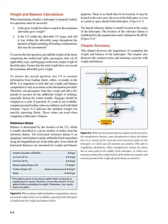Examples are placement of hoist systems attached to the side, and wing stores commonly used on military aircraft for external fuel pods or armament systems. Weight and balance calculations: When determining whether a helicopter is properly loaded, two questions must be answered. 1. Is the gross weight less than or equal to the maximum allowable gross weight? 2. Is the CG within the allowable CG range, and will it stay within the allowable range throughout the duration of flight including all loading configurations that may be encountered? To answer the first question, add the weight of the items comprising the useful load — pilot, passengers, fuel, oil (if applicable), cargo, and baggage — to the basic empty weight of the helicopter, and ensure that the total weight does not exceed the maximum allowable gross weight.